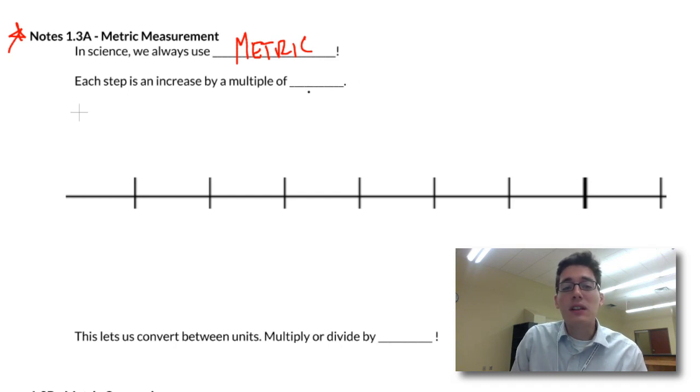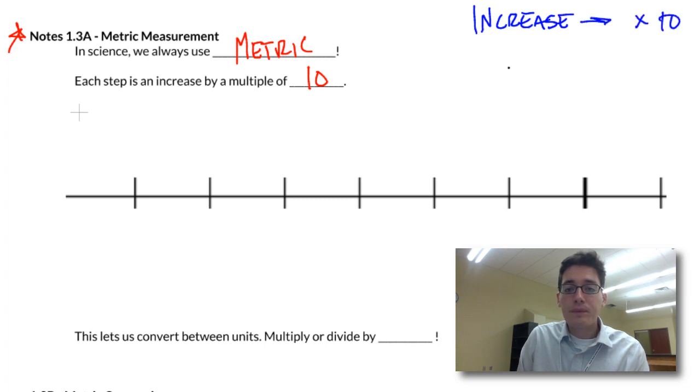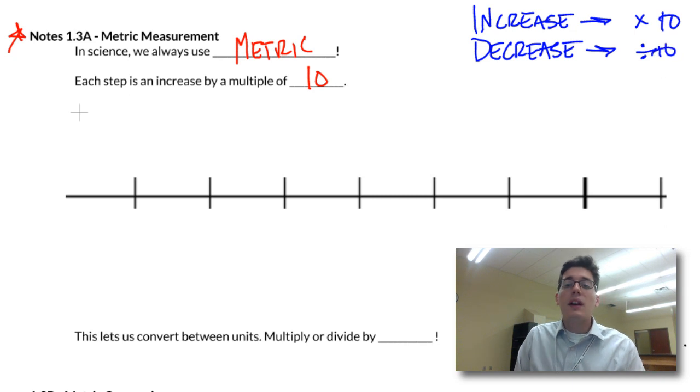Each step in the metric system is an increase by a multiple of 10. So anytime we increase our amount, we're multiplying it by a factor of 10, or if we decrease our amount, we're dividing by a factor of 10. If you're moving to the right where you're increasing, or you're having a larger size, you multiply by 10. If you are decreasing, we are doing the opposite, we are dividing by 10. And that's all it is.